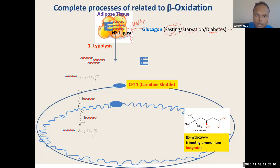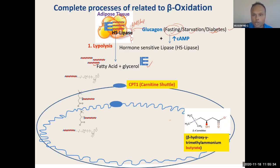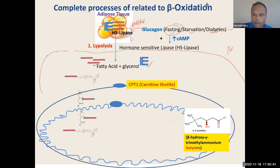This will dissolve the triglyceride into fatty acid and glycerol by hormone-sensitive lipase. This will come through blood and reach the target tissue — hepatocyte, muscle cell, liver. So this fatty acid will reach the target tissue through blood.